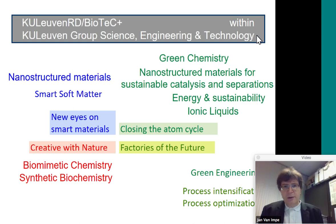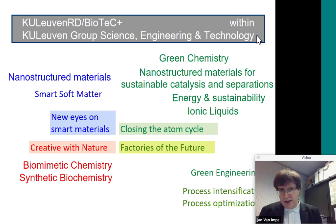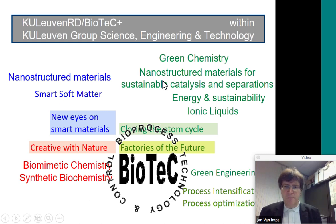Some time ago, at KU Leuven level, we started reorganizing whatever had to do with chemistry and biology in a few target areas. In the group Science, Engineering and Technology, this was concentrating on four modern buzzwords: New Eyes on Smart Materials, Closing the Atom Cycle, Creative with Nature, and Factories of the Future. The biotech team is mainly oriented in the quadrant of factories of the future, highlighting green engineering, process intensification and process optimization.